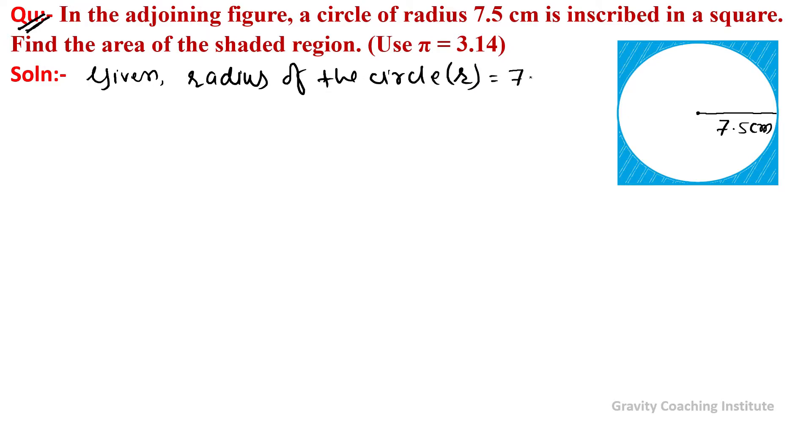The side of the square equals 7.5 times 2, so side of the square equals 2 times 7.5 cm, which equals 15 cm. Therefore, area of the shaded region...